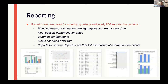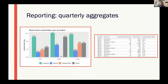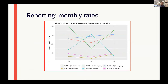Here's a screenshot of one of our quarterly reports — we also generate monthly and yearly reports. We include blood culture contamination rate aggregates and trends over time, floor-specific contamination rates, a table of common contaminants, the single-set blood culture rate, and reports for various departments listing individual contamination events. Here's an example aggregate plot with the corresponding table. For trends over time, the quarterly report shows individual months and the yearly report shows individual quarters.